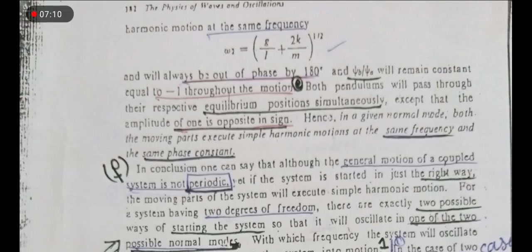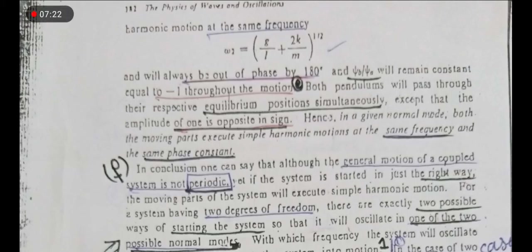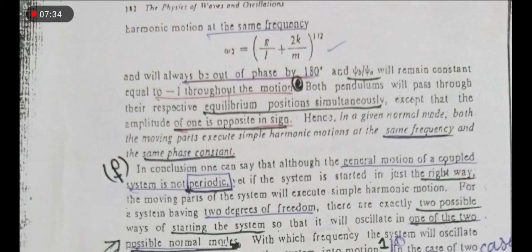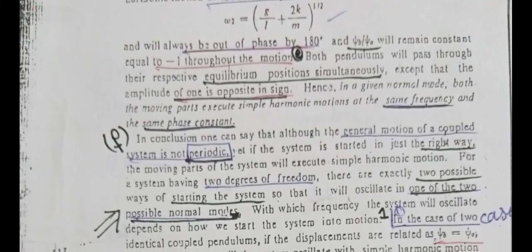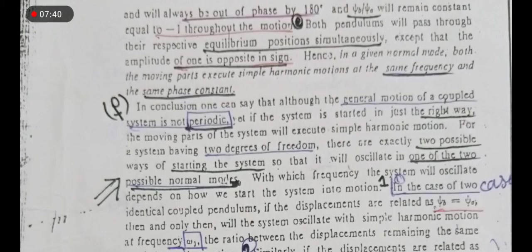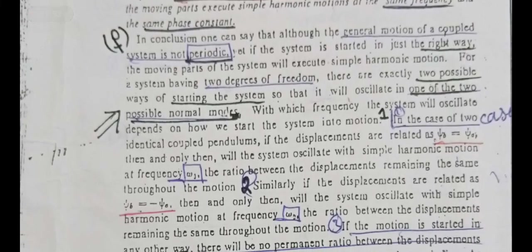Both pendulums will pass through their respective equilibrium positions simultaneously, except that the amplitude of one is opposite in sign۔ جب spring extend ہوتا ہے تو وہ واپس compressed بھی ہوگا، اور اگر compressed ہوا تو دوبارہ extend بھی ہوگا — وہ اپنے equilibrium position پر آتے ہیں۔ بس ان کا amplitude negative sign میں ہوتا ہے، یعنی opposite in sign ہوتا ہے۔ Hence in a given normal mode, both moving parts execute simple harmonic motion at the same frequency and at the same phase constant۔